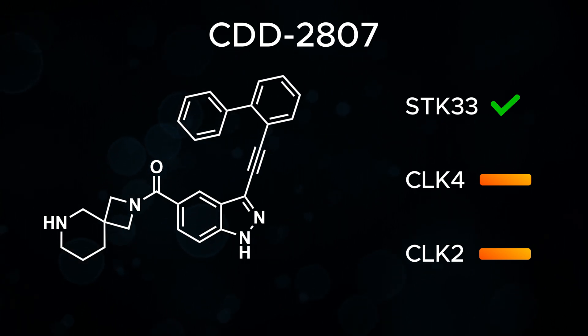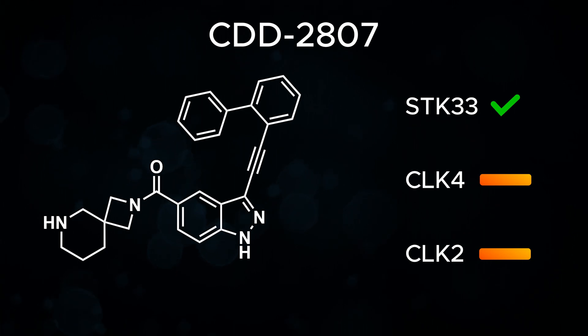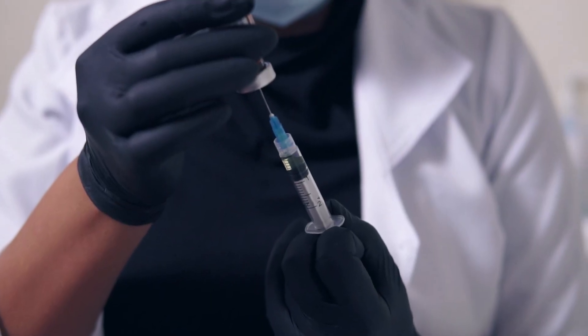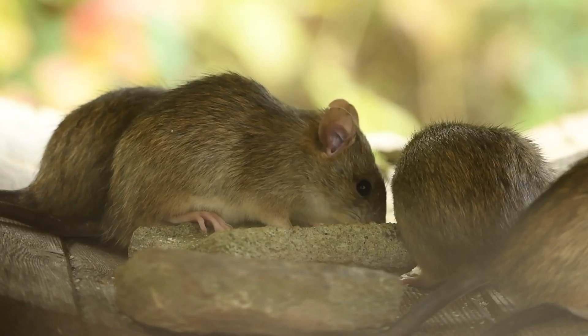This molecule was taken forward into testing in mice, which were subjected to two different dosing protocols. The experiments involved dosing the male mice with CDD-2807, and then measuring the number of pups produced by the female mice.